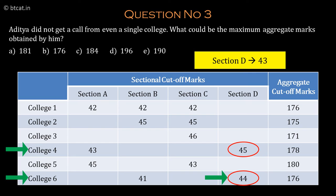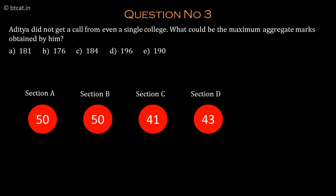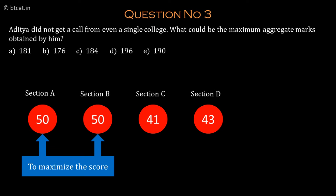So Aditya's maximum total will be 41 in section C plus 43 in section D, plus 50 and 50 in sections A and B, since we want to maximize his score. Adding all of these gives 184 as the answer.